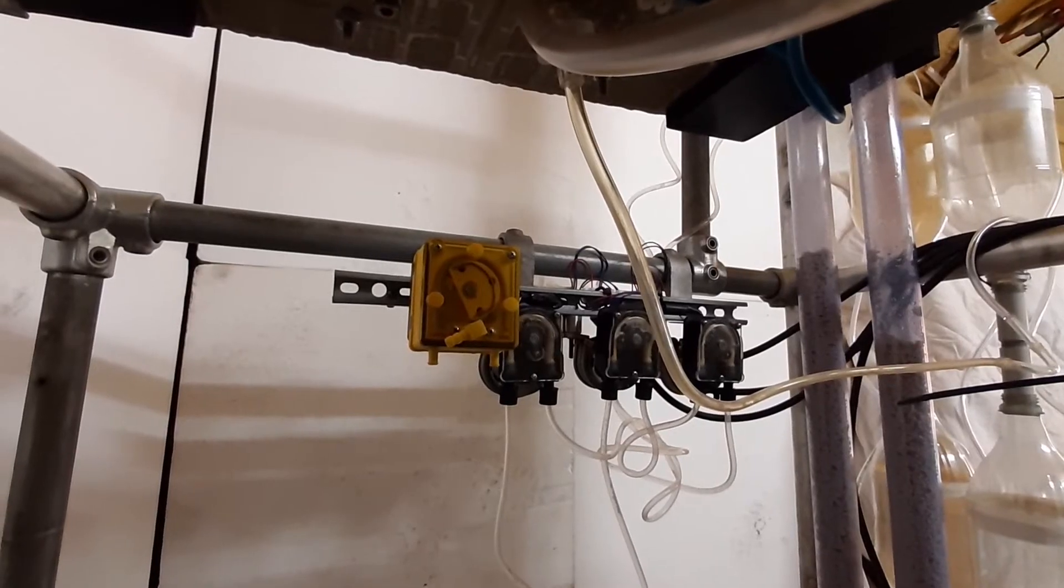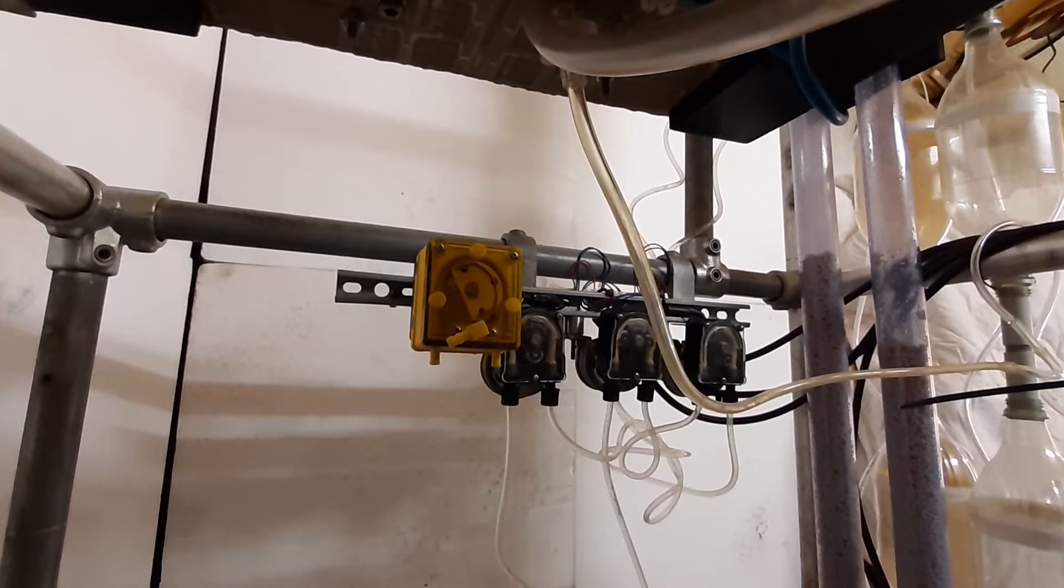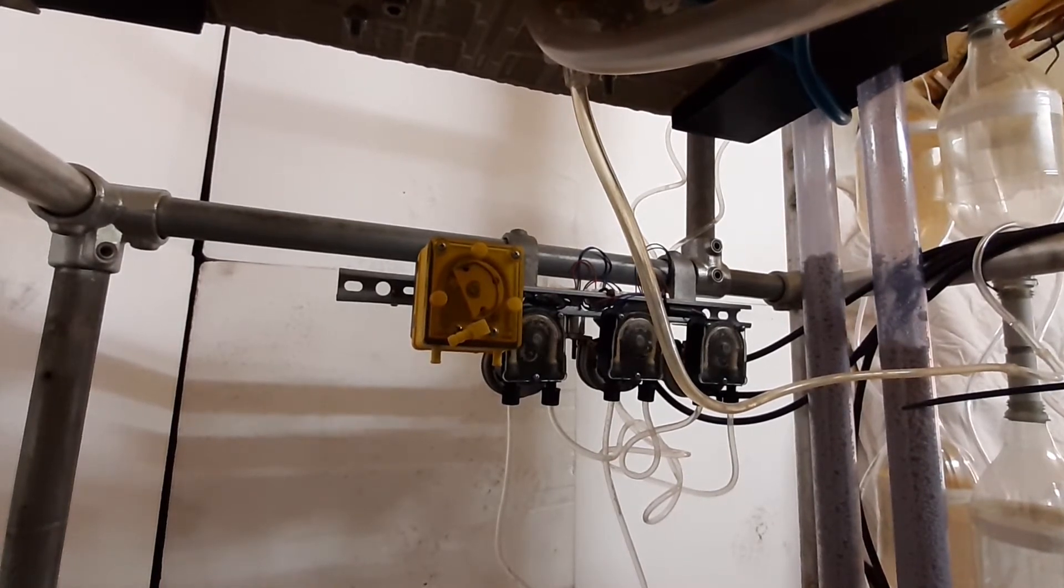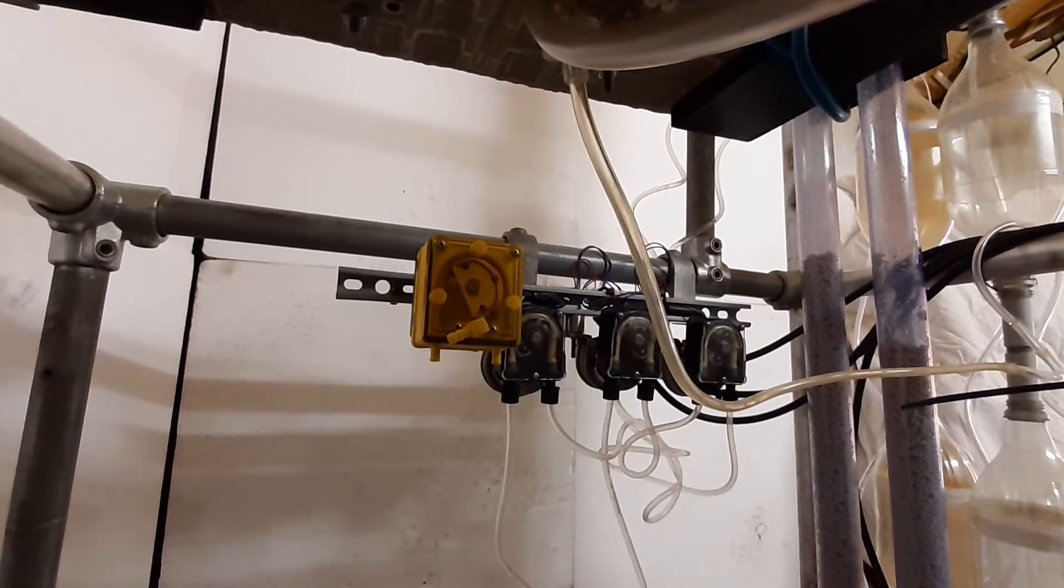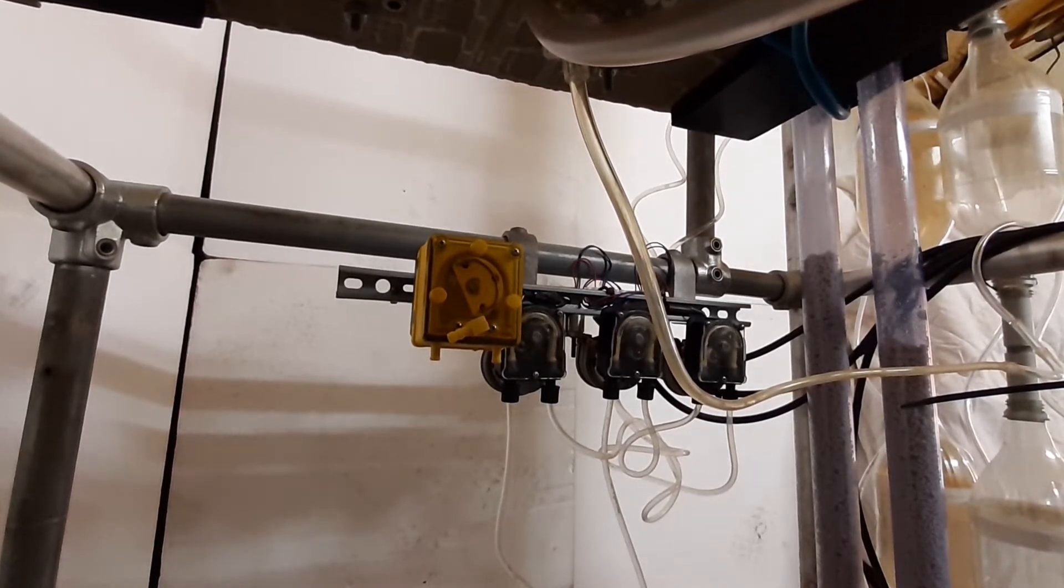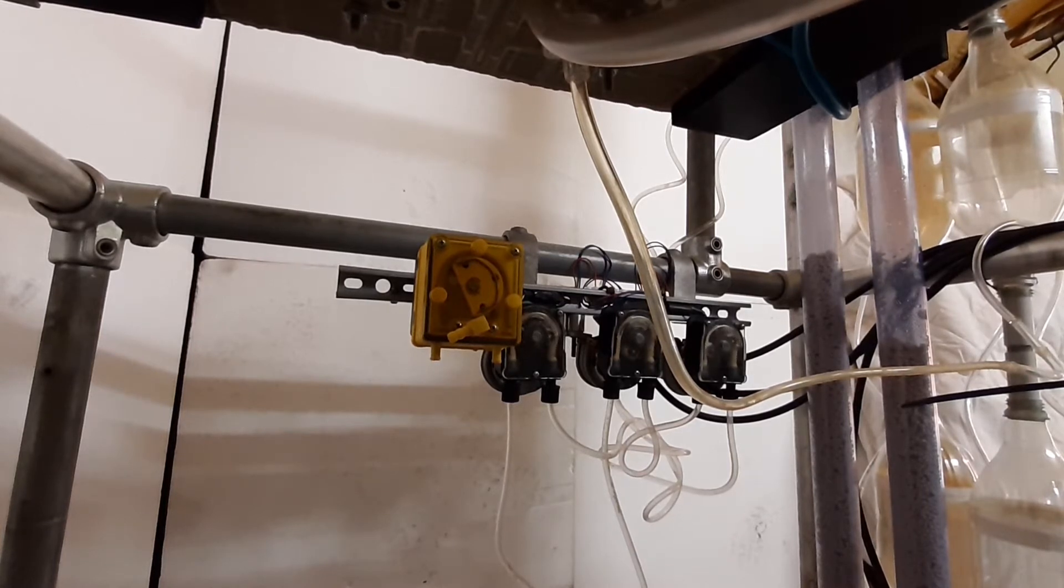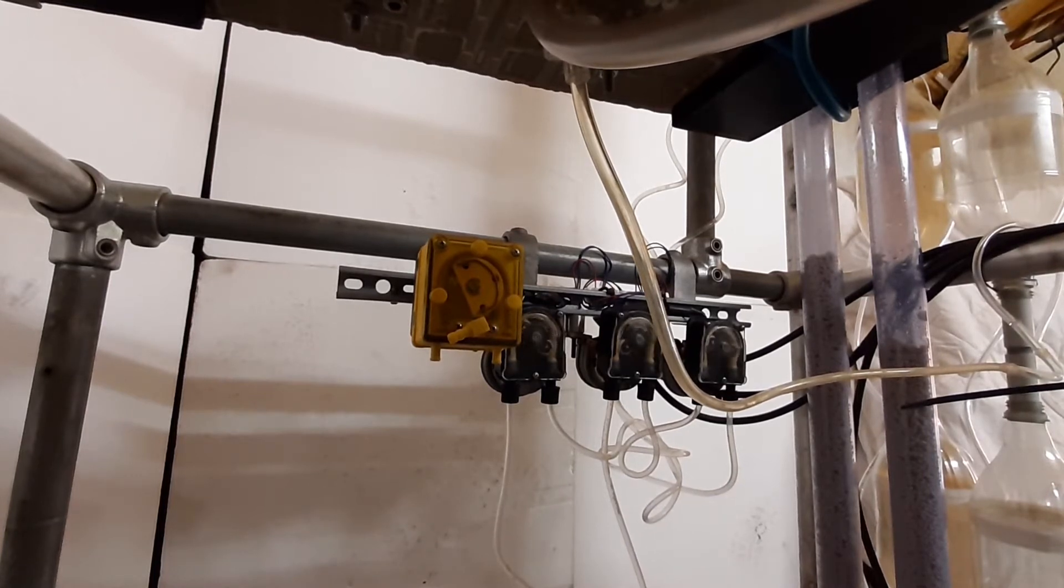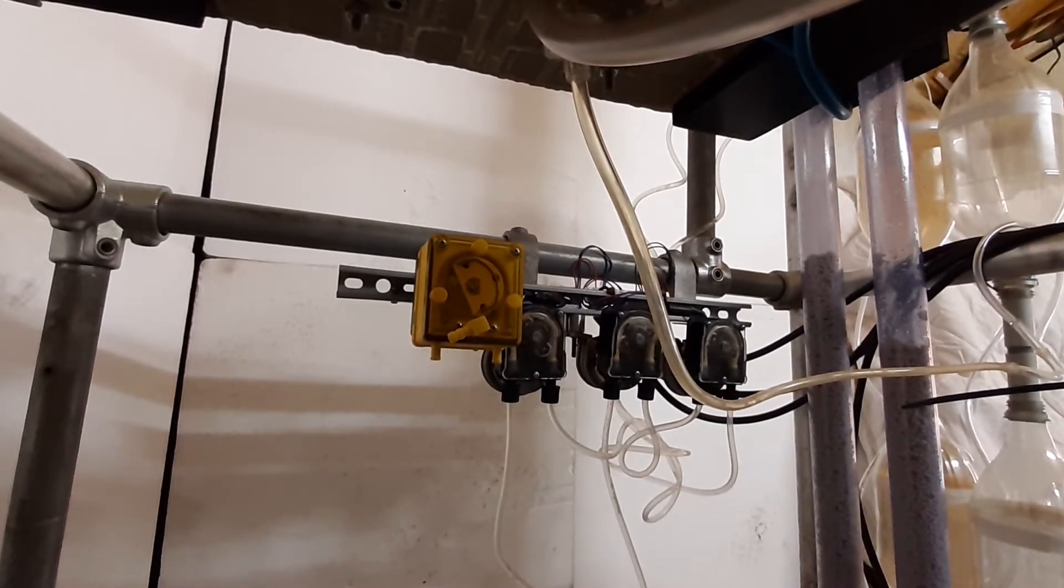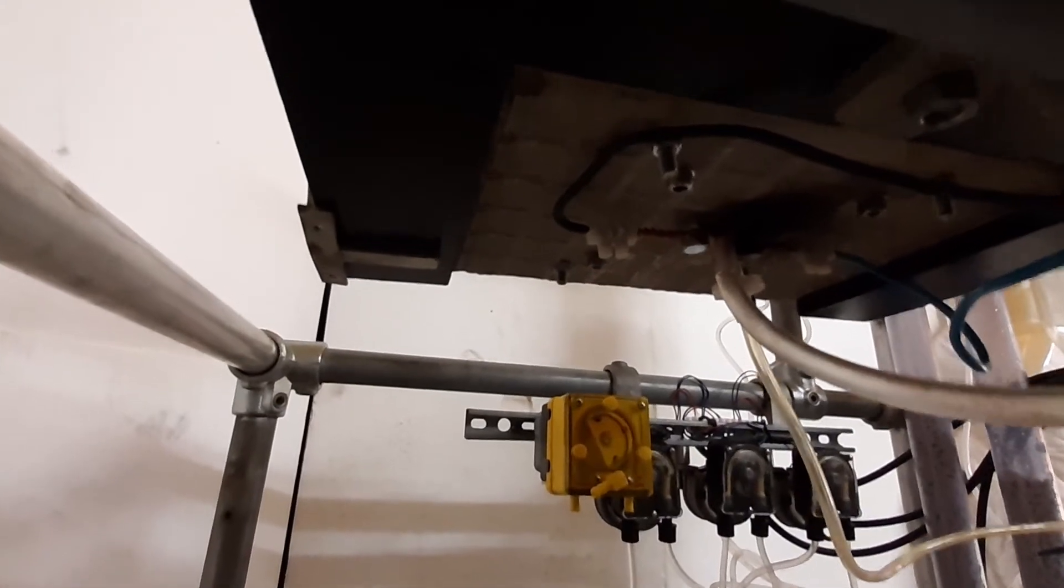Those are peristaltic pumps. They don't move a lot of liquid but they are chemically resistant. The tubing inside is HDPE so it will be able to resist the nitric acid. And the pump on the left is not connected. I had a bit of a problem running it, so that's a work in progress.